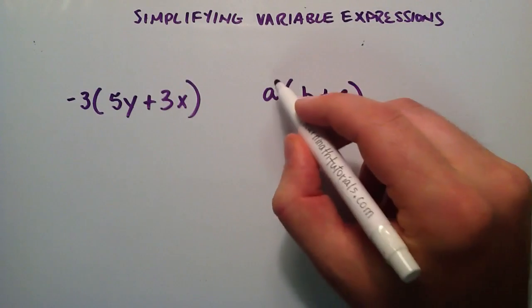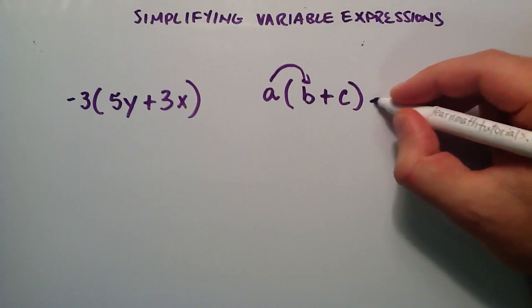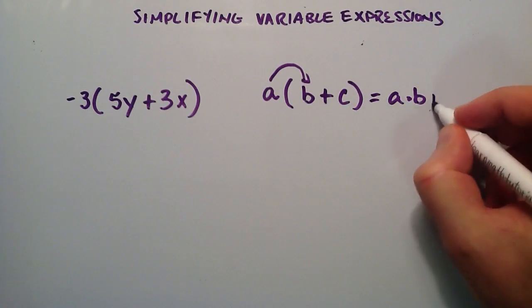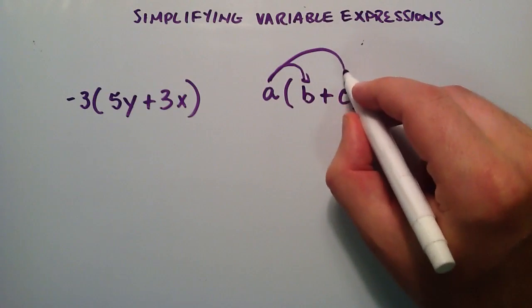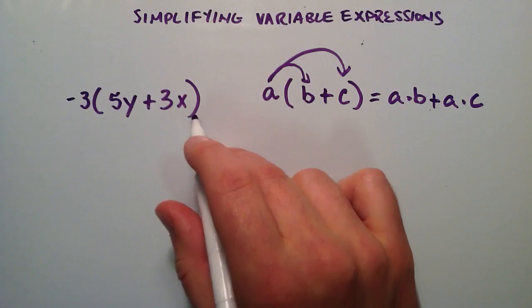And I'm saying that you can take the A, you multiply it against the B, so this becomes A times B, and then you put the plus sign there, and then you do A times C next.